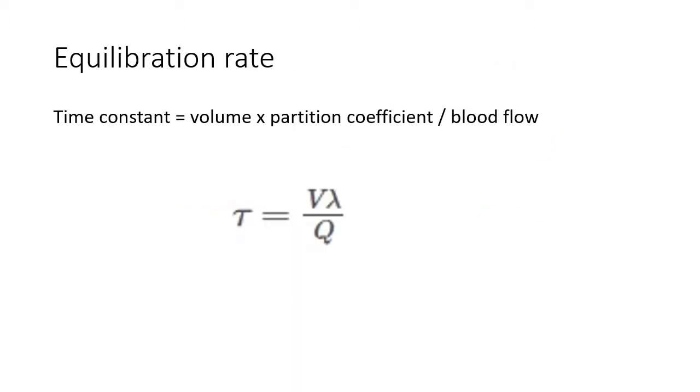This is the equation that describes the rate of equilibration of a tissue compartment. You will see this equation in the chapter on inhaled anaesthetic kinetics in Miller's. It's very useful to understand it. If we consider each of the components of this equation, then it makes good sense.